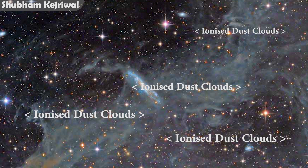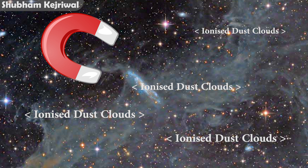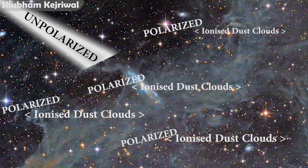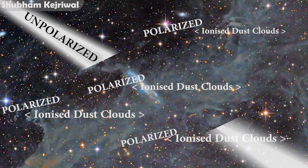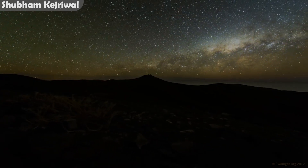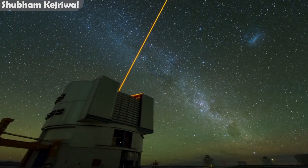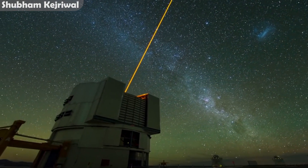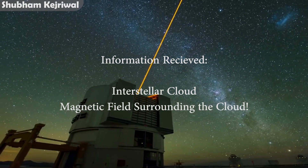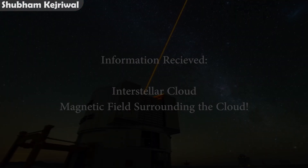When these charged particles are present inside a magnetic field, due to the magnetic field they get polarized in a certain direction. Now if unpolarized light from a background star passes through this polarized interstellar dust cloud, it also gets polarized. When telescopes receive this polarized starlight which passed through the interstellar medium, we can tell a lot about the characteristics of the interstellar cloud as well as the magnetic field inside of which it exists.